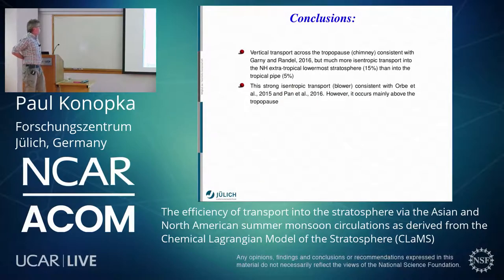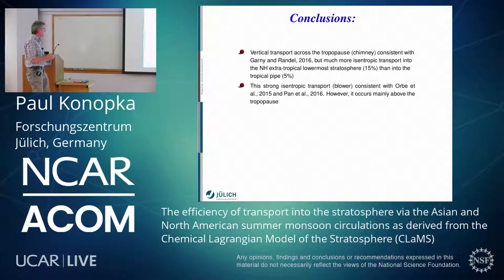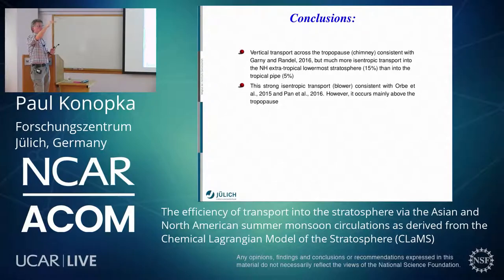What was concluded in this paper is that the vertical transport across the tropopause — a kind of chimney — is consistent with Garnier and Randall, but much more goes into the northern hemisphere extratropical lowermost stratosphere, something like 15%, and into the tropical pipe. The chimney is crossing the tropopause, and then the blower redistributes this tracer slightly above the tropopause — mainly into the northern hemisphere lowermost stratosphere, but also a significant part goes to the tropical pipe.